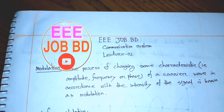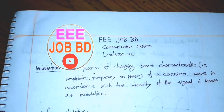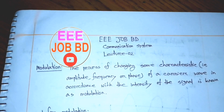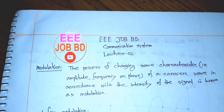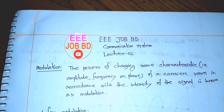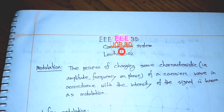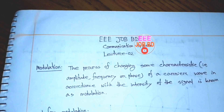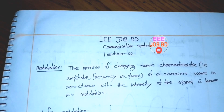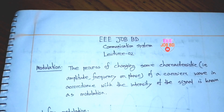This is the definition: Modulation is the process of changing some characteristics — amplitude, frequency, or phase — of a carrier wave in accordance with the intensity of the modulating signal. The amplitude, frequency, and phase change together constitute modulation.